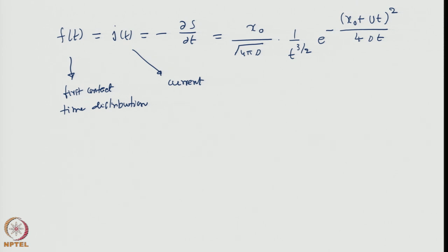This is the distribution of times spent before a first contact occurs. Absorption is equivalent to first contact because there is no second chance given. Hence, the flux impinging on the absorber itself becomes the first contact time distribution.